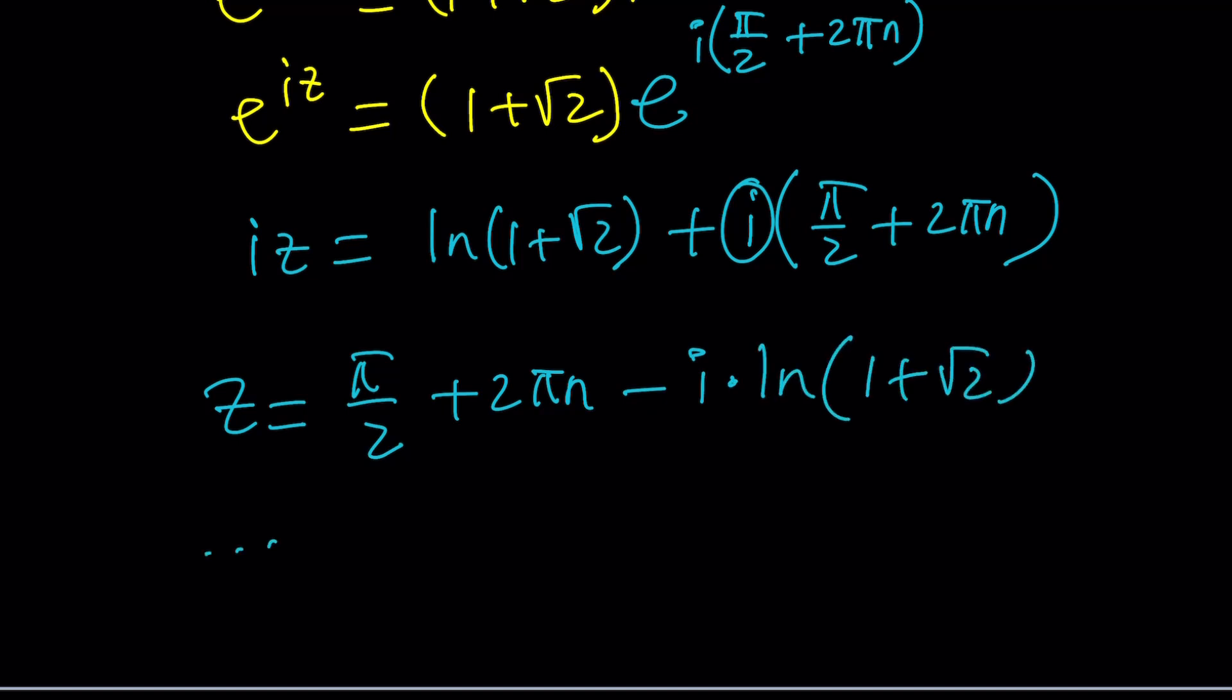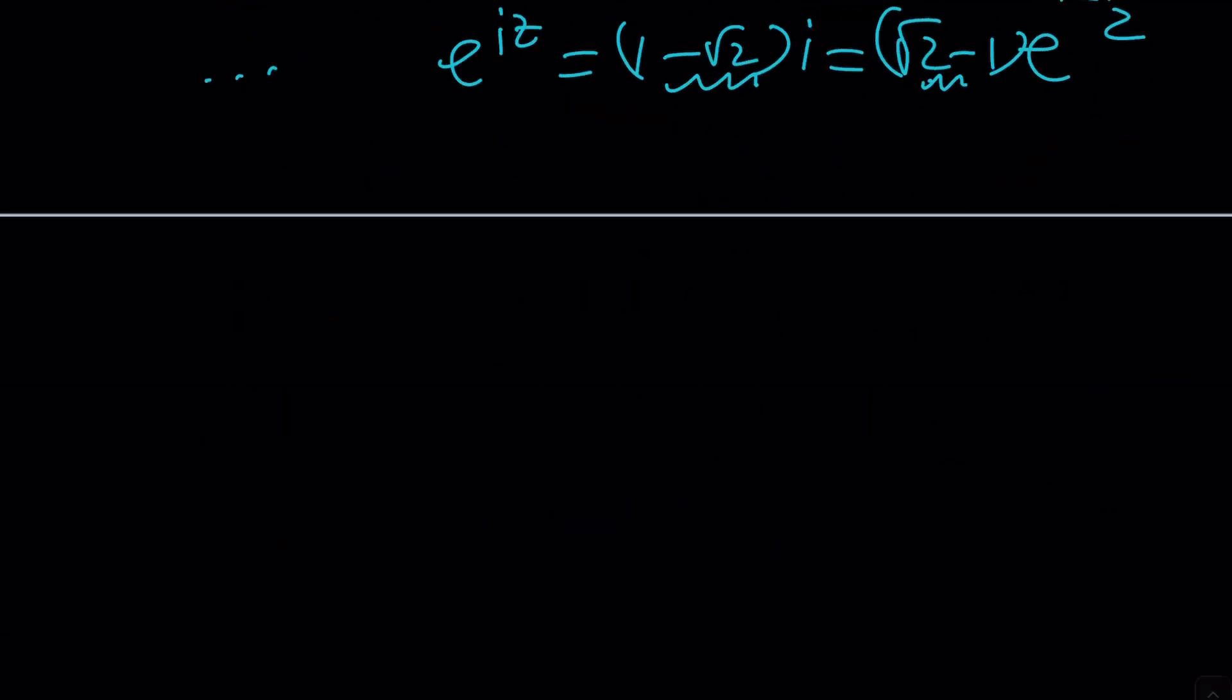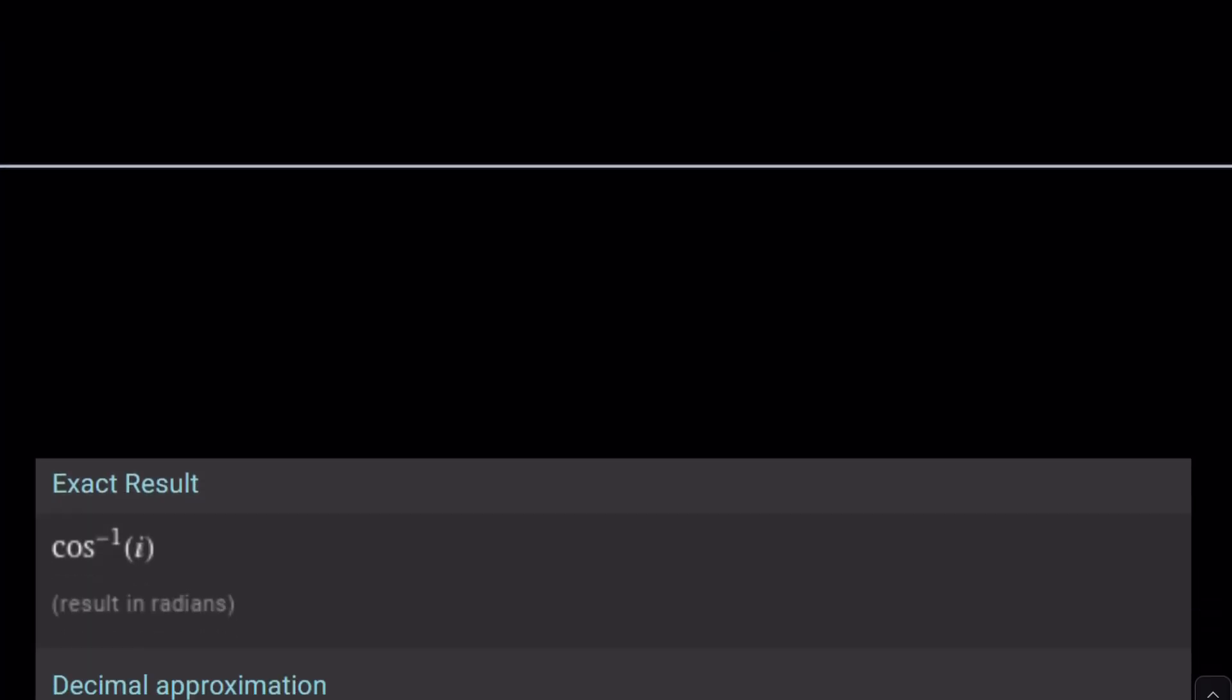And similarly, for the other case, which is e to the iz equals 1 minus root 2i, you can do the same thing. But one thing that you need to be careful about is the argument is going to be negative pi over 2 because this is a negative number that puts it in the negative region of the imaginary axis, so on and so forth. And this brings us to the result from Wolfram Alpha.